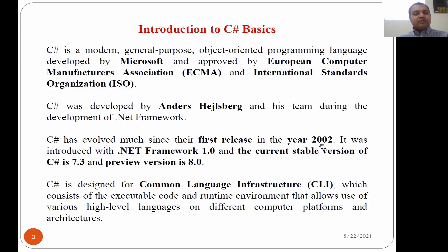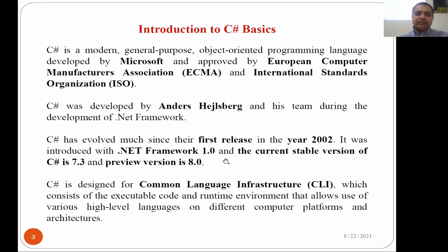The first release was in 2002, but it was not a professional release — it was just for testing purposes. It was introduced with .NET Framework 1.0. The current stable version is C# 7.3, and the preview version is 8.0. C# is a wonderful platform and is updated according to market requirements.